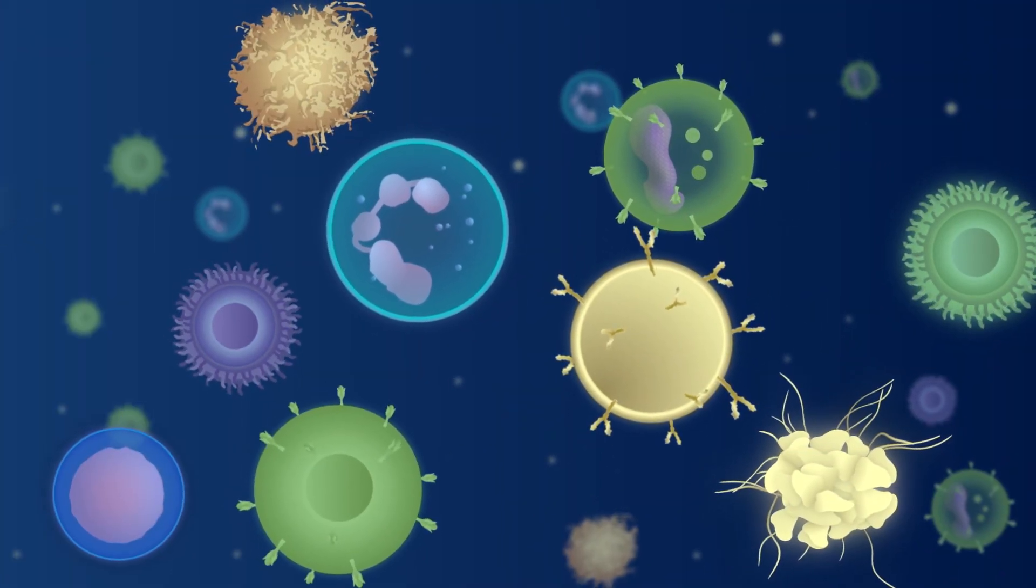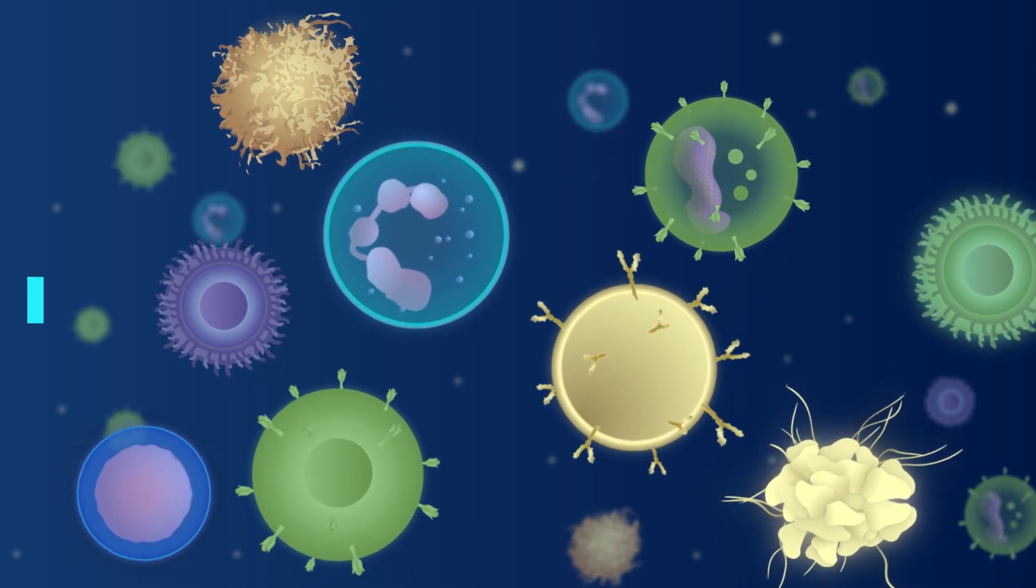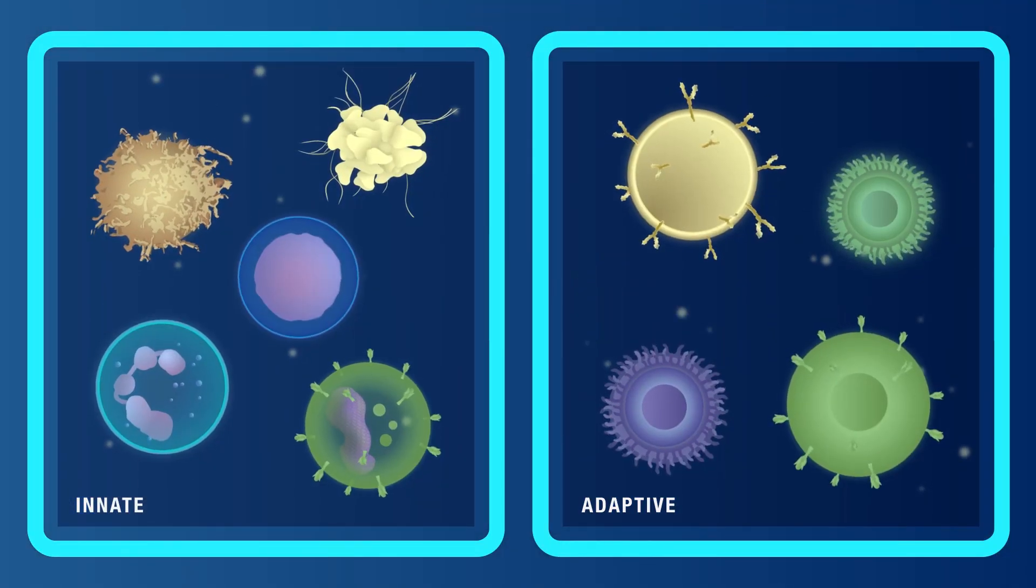There are two parts of the immune system that work together to protect the body from disease: the innate and adaptive immune systems.